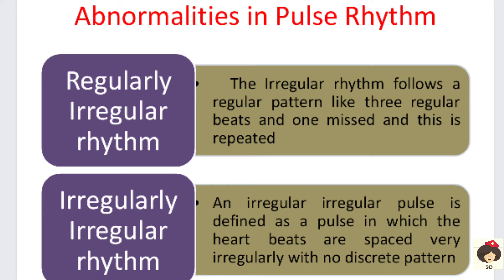Abnormalities in pulse rhythm include regularly irregular rhythm and irregularly irregular rhythm. Regularly irregular rhythm is when every beat follows a regular pattern — for example, three regular beats followed by one missed beat, repeated consistently. Irregularly irregular rhythm is when the heartbeats and spaces vary with no discernible pattern — sometimes there is a beat, sometimes there is not, sometimes the pulse is weak, sometimes strong.